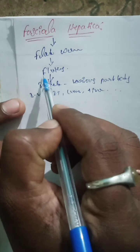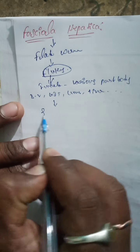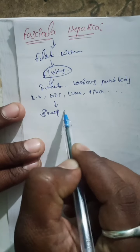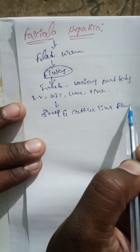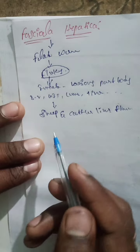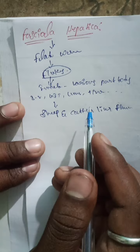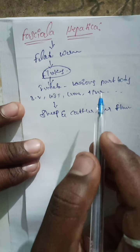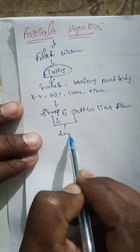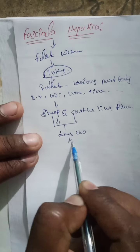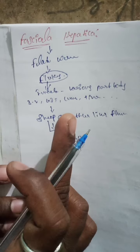So what type of fluke is Fasciola hepatica? It is a sheep and cattle liver fluke — well developed in sheep and cattle. Incidentally, human fascioliasis is acquired by drinking water contaminated with sheep and cattle dung, which leads to Fasciola hepatica infection in humans.